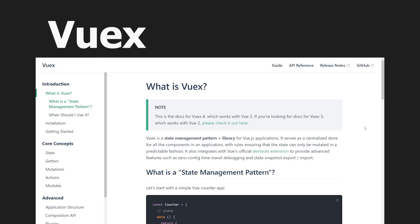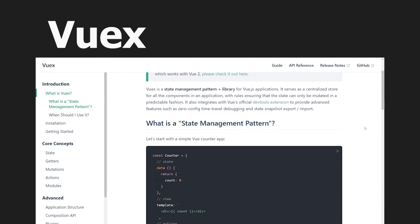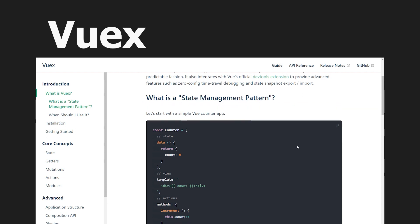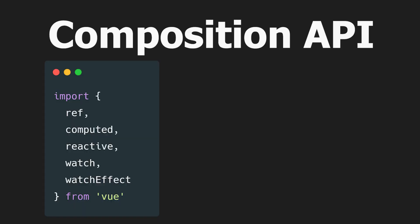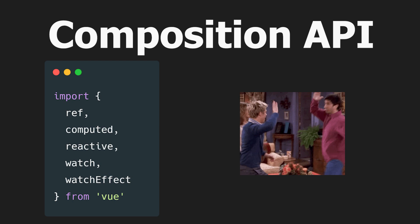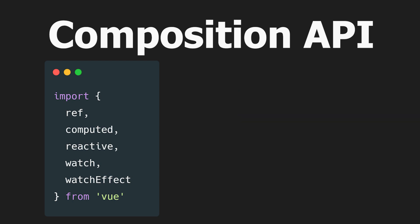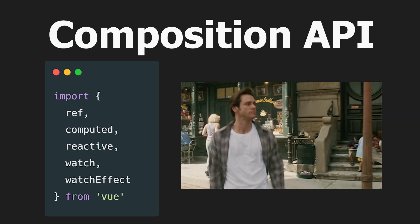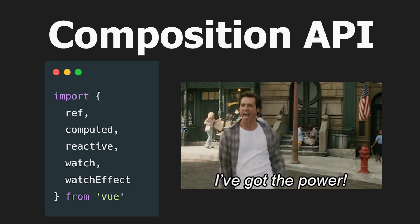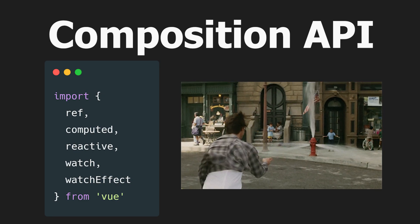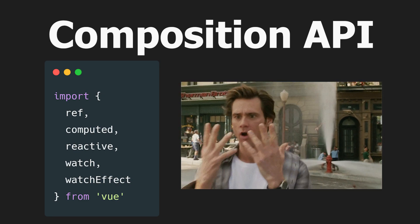Vuex is an awesome state management library. It's simple and integrates well with Vue. But the new Composition API in Vue 3 exposes the underlying reactivity system. It introduces a new way for structuring our application. The new reactivity system is so powerful that it could be used for centralized state management.